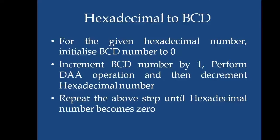The operation of DAA is to convert any hexadecimal number to its BCD equivalent. Then for this operation, the hexadecimal will be decremented. These three operations will be repeated until the hexadecimal number becomes 0.